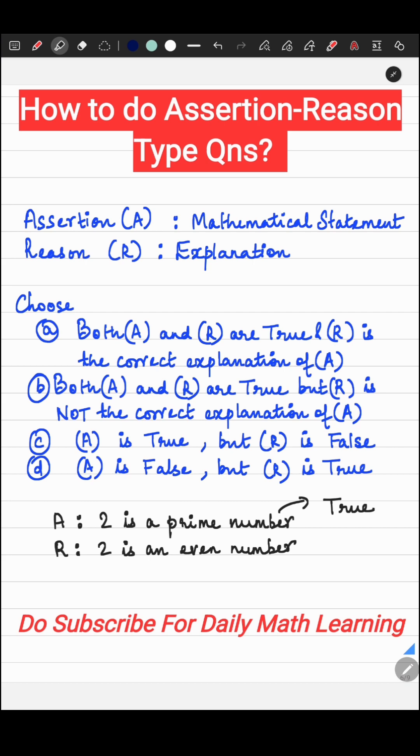The second statement, the reason, is given that two is an even number. Is two an even number? Yes, it is divisible by two, so two is an even number. So this statement, the reason, is also true.